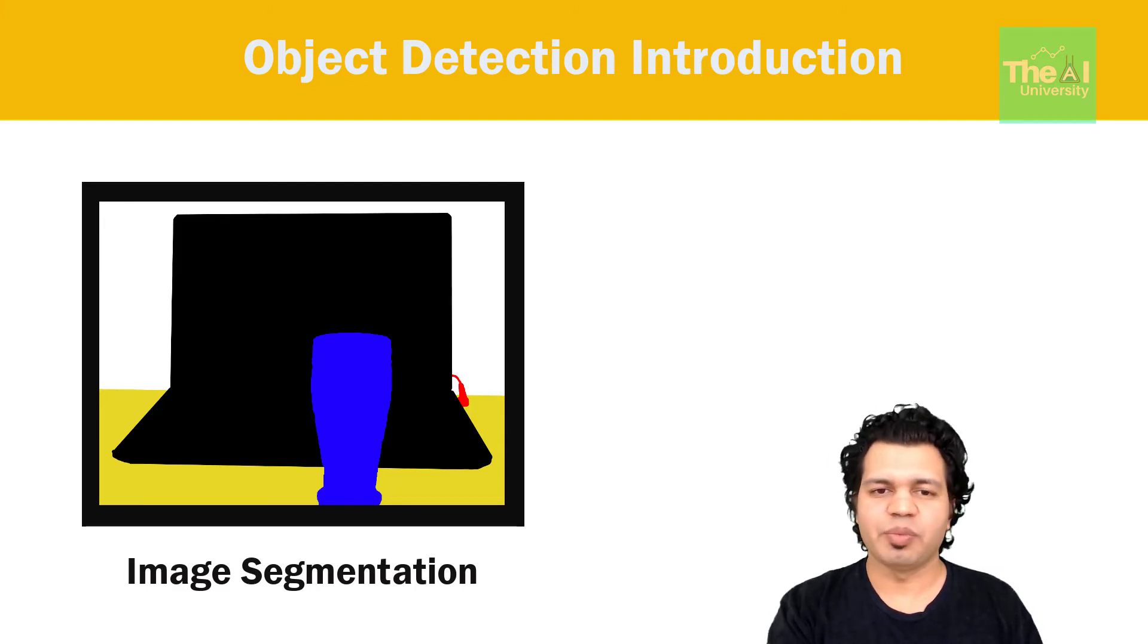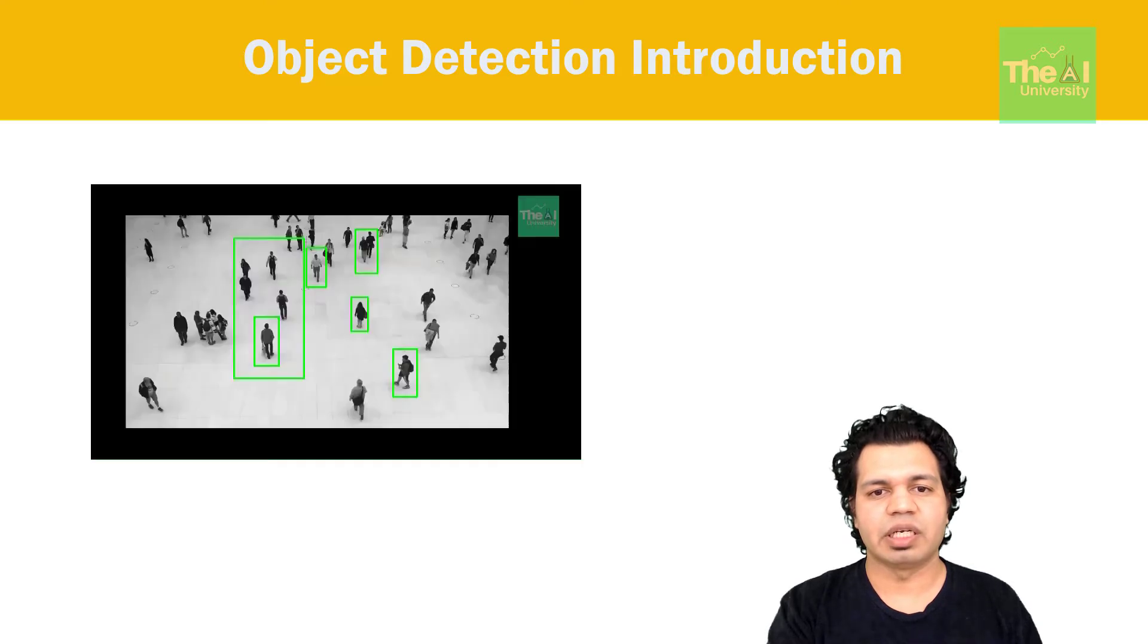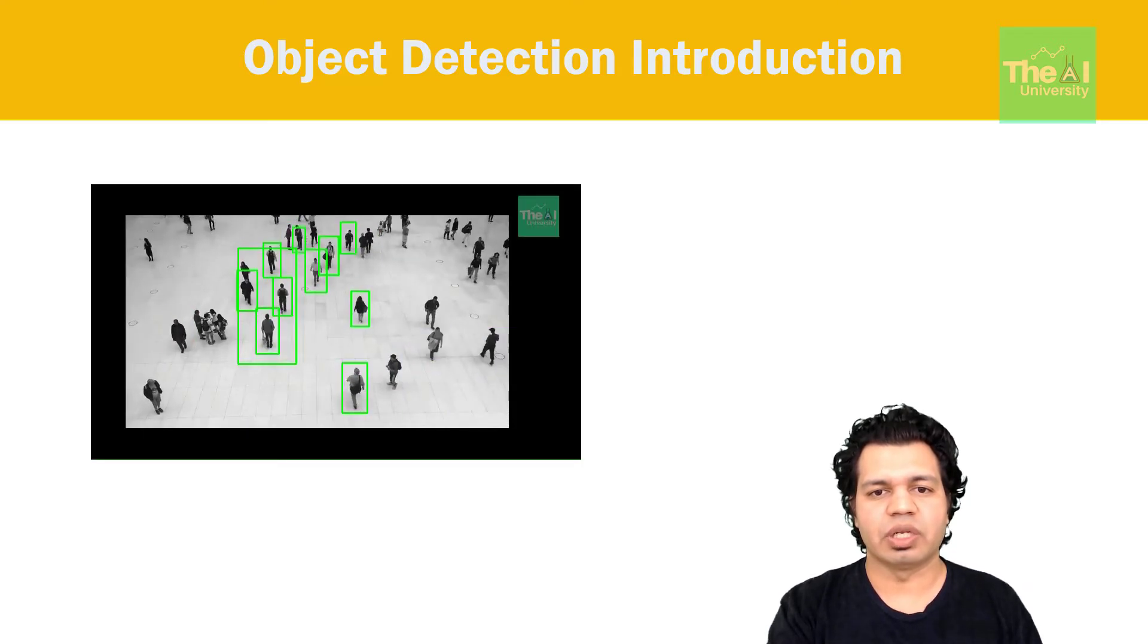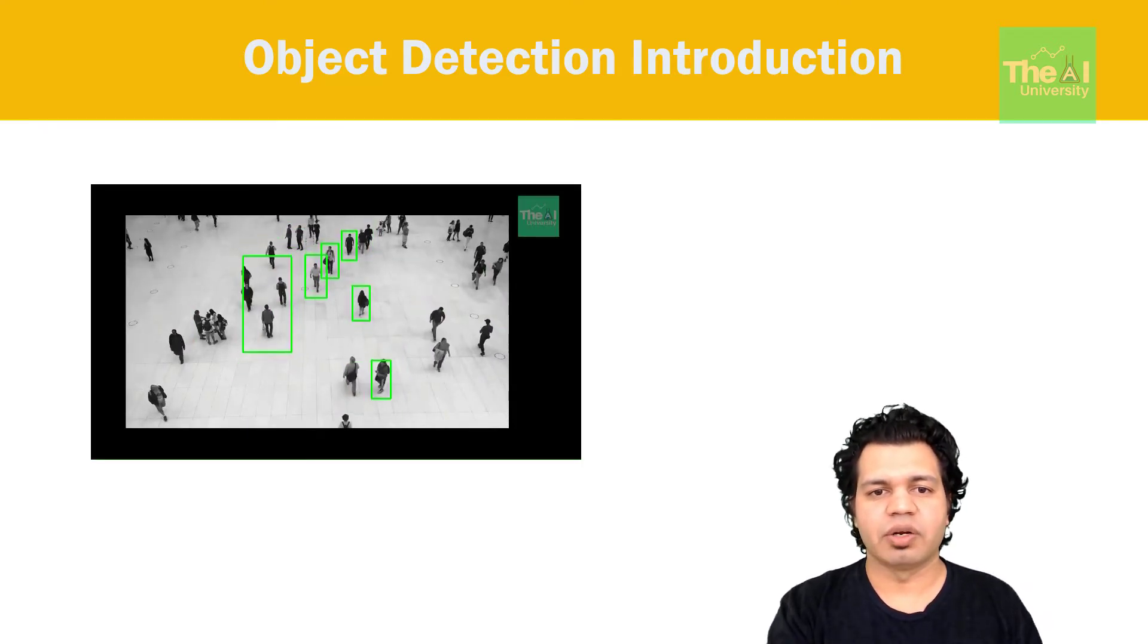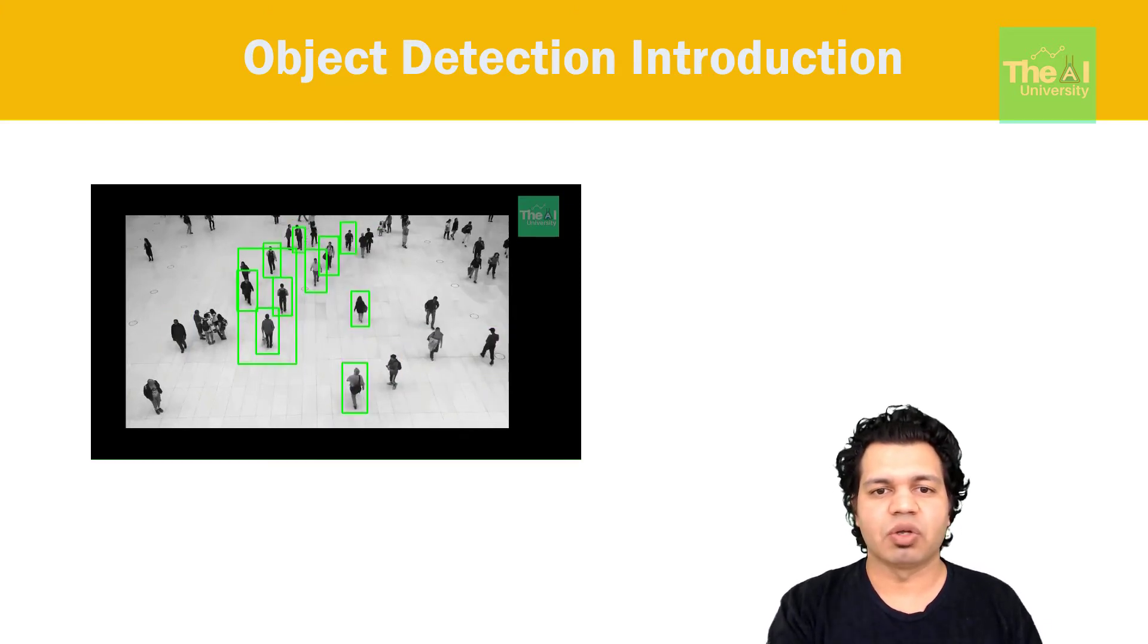Object detection in computer vision was a multi-step process before the introduction of deep learning algorithms like convolutional neural networks, where the model recognizes the features of an image by repeatedly training on the image data.